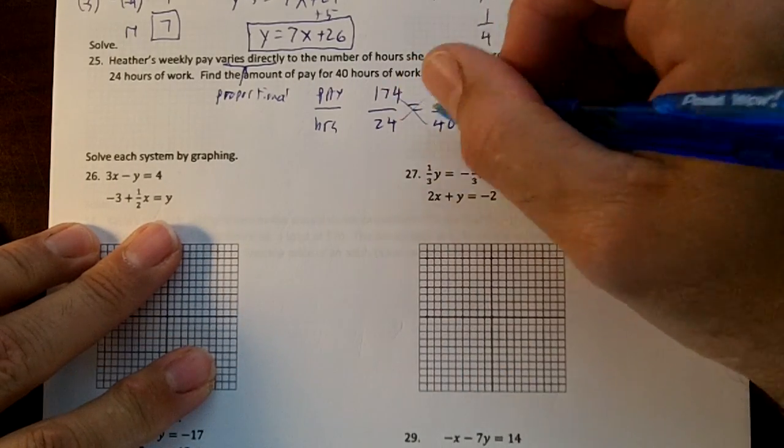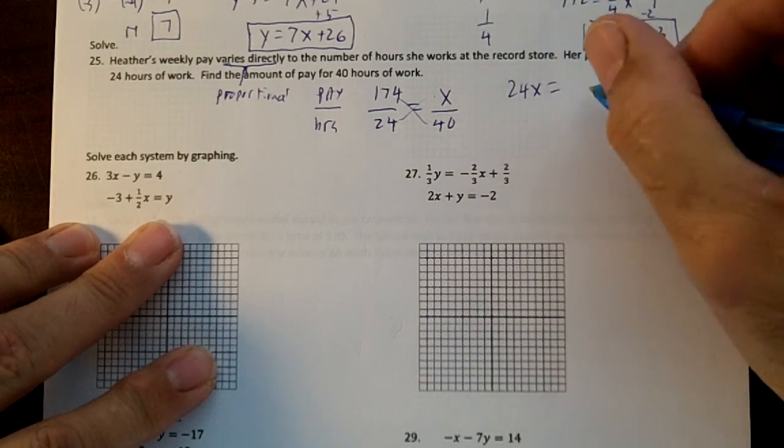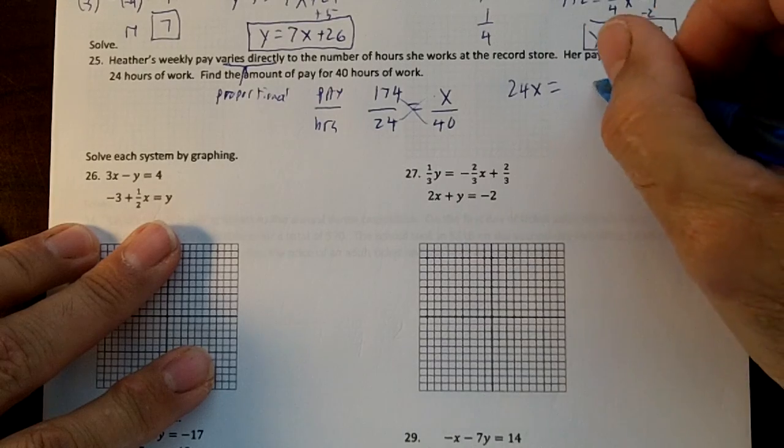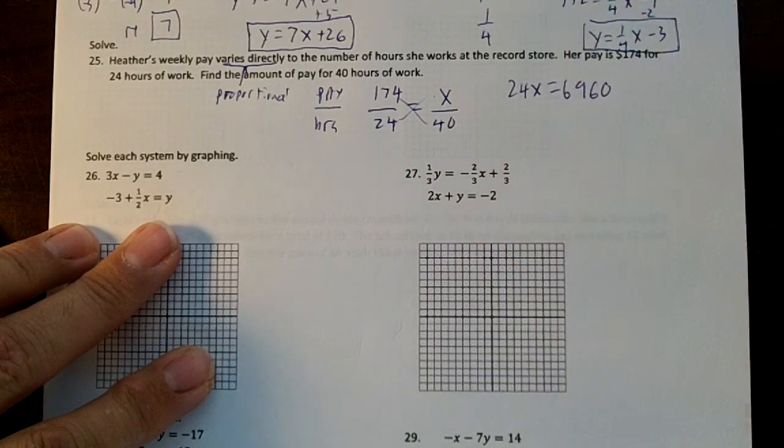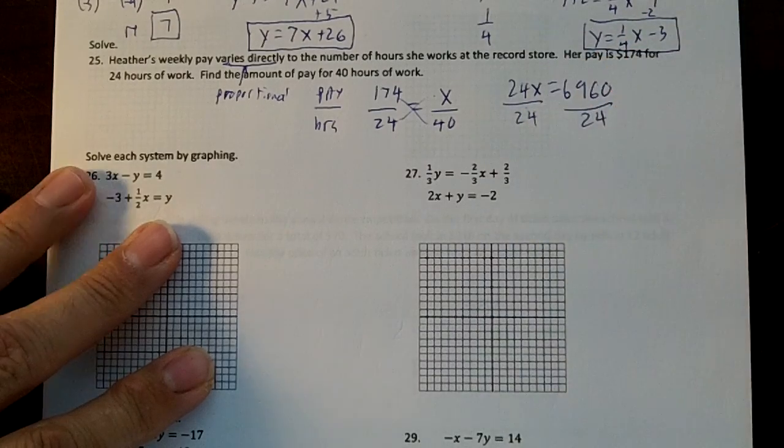So we're going to cross multiply. 24x equals—I could do 174 times 40. In my brain it's going to be 0, 16 carry the 1, 29 carry the 2, 6. Now then divide by 24. I could do this in my brain.